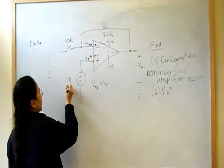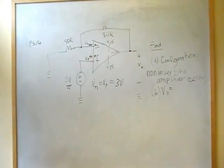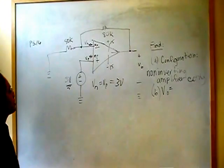And we also know that V-N is equal to V-P. And in this case, our V-P is three volts. So, in this configuration, we have V-N is equal to V-P, which is equal to three volts.